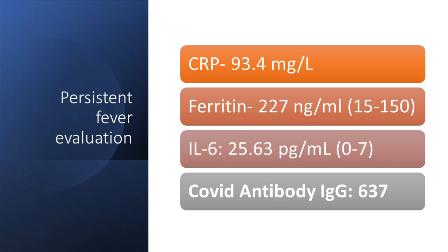She had high CRP, high ferritin, high IL-6, and a COVID antibody titer of 637. While COVID antibodies can be non-specific, the titers help: acute COVID gives around 2000-plus, dropping to ~900 by three months and to this level by five months. So this child probably had COVID around five to six months prior. These are unvaccinated children — children still don't have the vaccine. So this looked like a post-COVID syndrome.